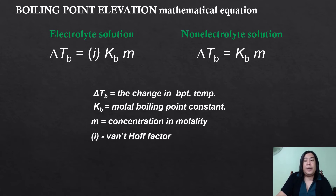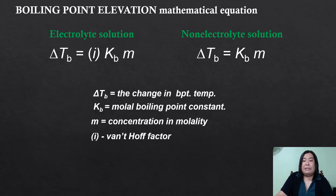If you are going to compare the mathematical equations for solving boiling point elevation, the only difference is that in an electrolyte solution, the Van't Hoff factor i is being considered and included in the equation, while in a non-electrolyte solution, it is no longer written.